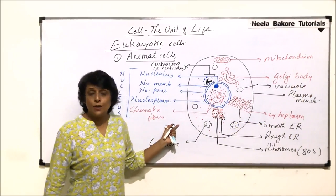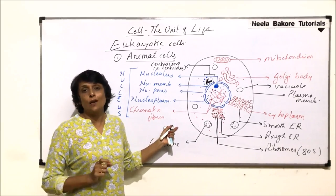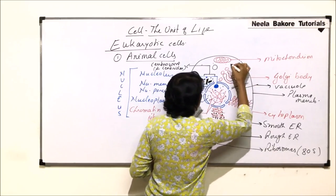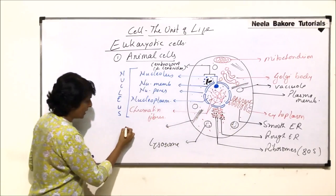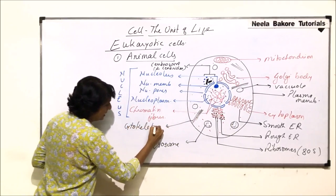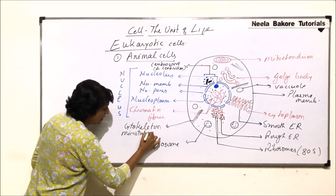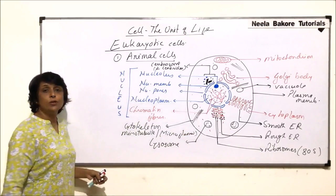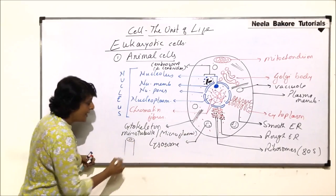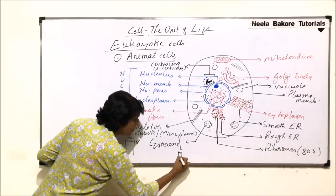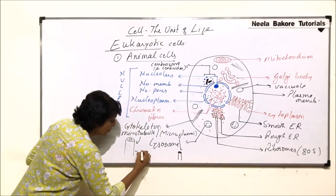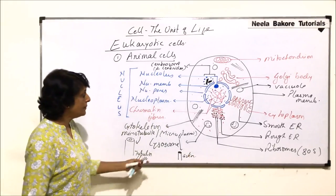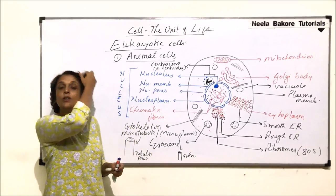In animal cells we also see cytoskeletal structures, which are normally drawn in the form of rod-like things. The cytoskeletal structure can be a microtubule or a microfilament. Microtubules are hollow, pipe-like structures, whereas microfilaments are solid rod-like structures. Microtubules are made up of tubulin protein and microfilaments are made up of actin proteins. Their function is to provide strength and framework to the cell.